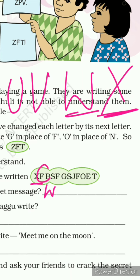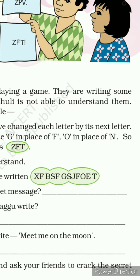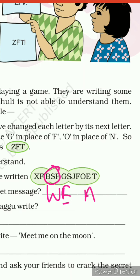Just like here F — F replacement hai E ka, E ke baad F aata hai. So aapka first word ban raha hai: X F ka meaning hai V E. Now the second one is B S F — B se pehle aapka aata hai A, and R se pehle aapka aata hai... S se pehle R, and F se pehle E. So aapka next word ban gaya hai A R E.